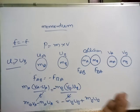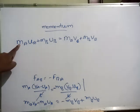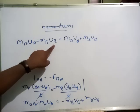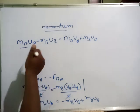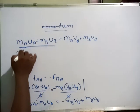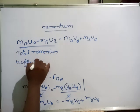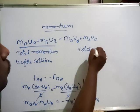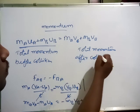Now we separate all the initial velocities to one side and the final velocities to the other side. The initial momentum of the first body plus the initial momentum of the second body — this is the total momentum before collision. It is equal to the total momentum after collision. Both are equal.